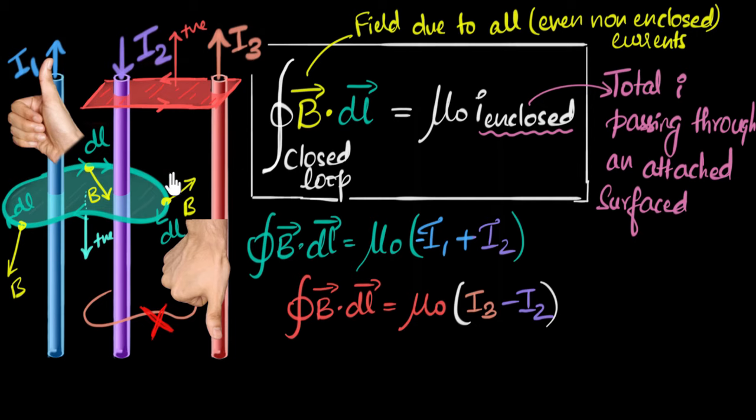So they end up giving zero contribution. So you can imagine as you walk around this loop, in some cases, the contribution of this is positive. In some places, the contribution is negative. And so the total contribution of them is zero.